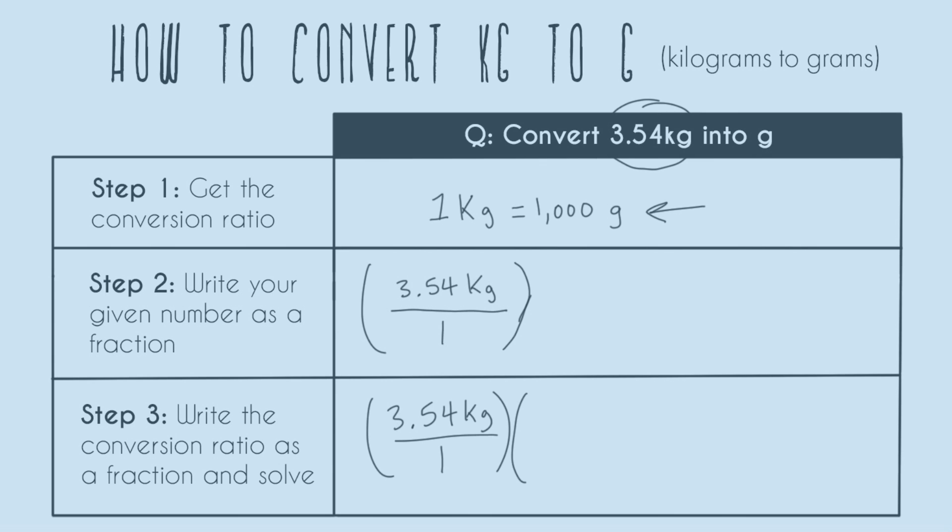Now I'm going to set up a parenthesis like this because I'm going to turn that one kilogram equals a thousand grams into a fraction. The way we do that is the equal sign literally just becomes the fraction bar. Now we want to decide: does one kilogram go on top or does a thousand grams go on top?